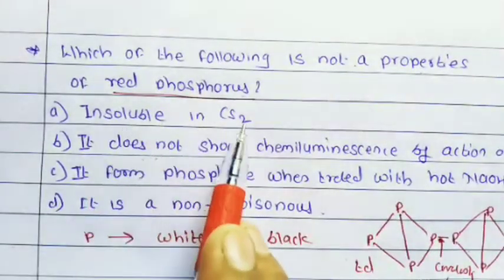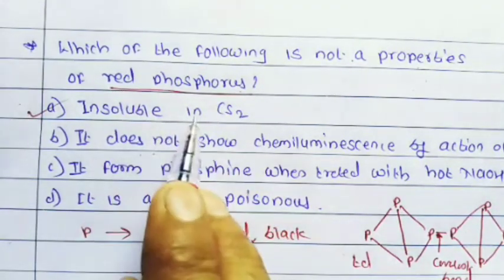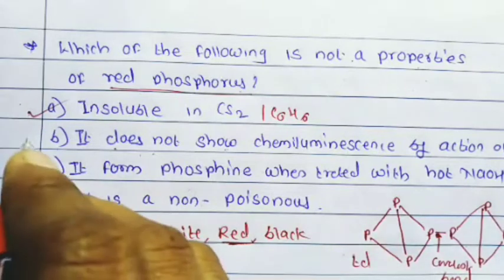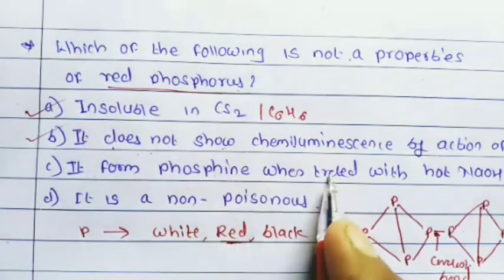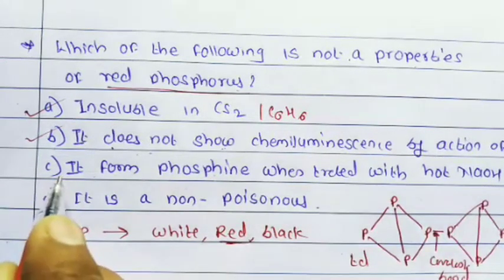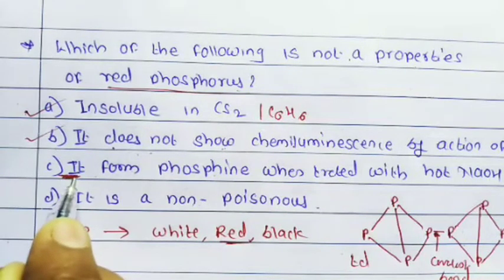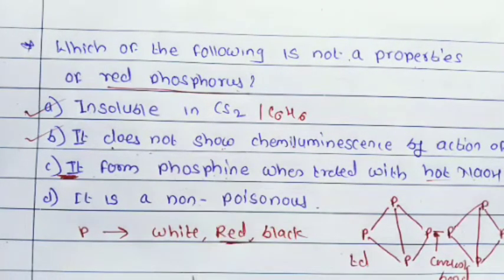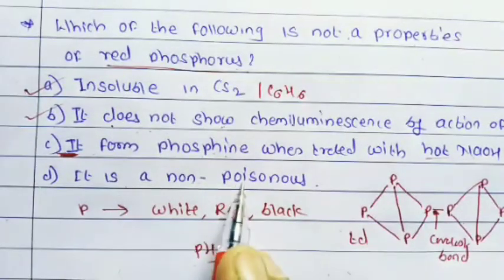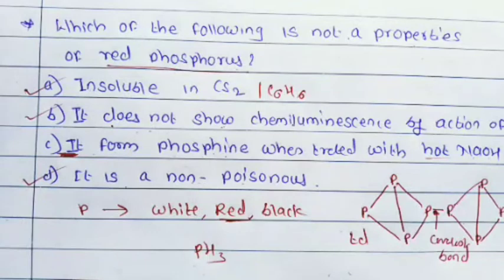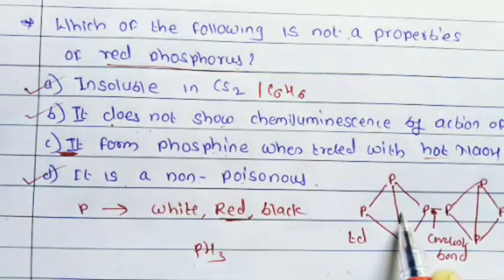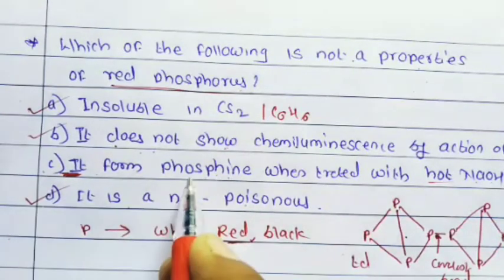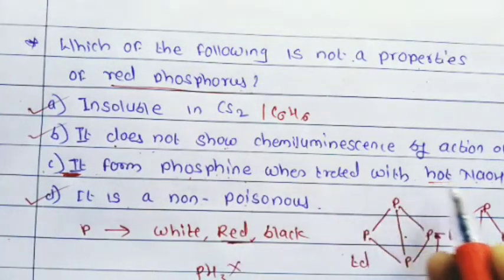Red phosphorus: (1) is insoluble in CS₂ and C₆H₆ — correct; (2) does not show luminescence by action of air — correct; (3) forms phosphine when treated with hot NaOH — this is NOT a property of red phosphorus, as red phosphorus does not react with hot NaOH to form PH₃; (4) is non-poisonous — correct. So the answer is option 3.